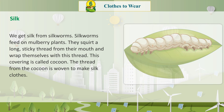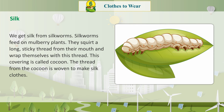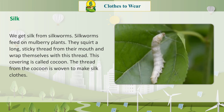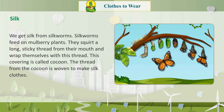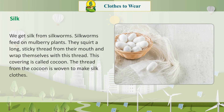Silk: We get silk from silkworms. Silkworms feed on mulberry plants. They squirt a long sticky thread from their mouth and wrap themselves with this thread. This covering is called a cocoon. The thread from the cocoon is woven to make silk clothes.